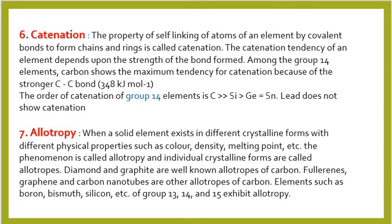Allotropy: when a solid element exists in different crystalline forms with different physical properties, those forms are called allotropes and the property is called allotropy. The different physical properties include different colour, density, melting point, boiling point, etc. The individual crystalline forms are called allotropes. For example, diamond, graphite, fullerene, carbon black and kajal are different allotropes of carbon. Elements such as boron, bismuth, silicon and others of group 13, 14 and 15 also exhibit allotropy.